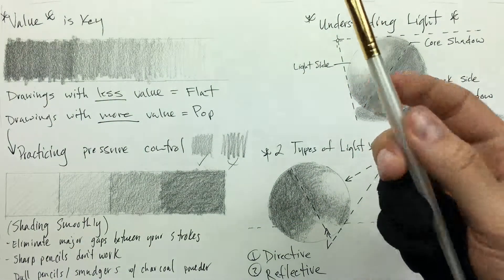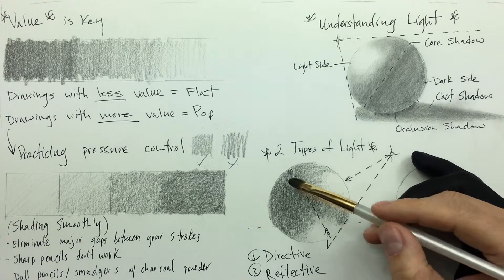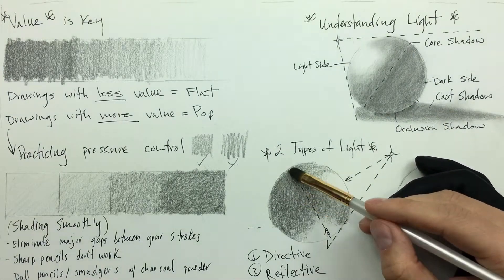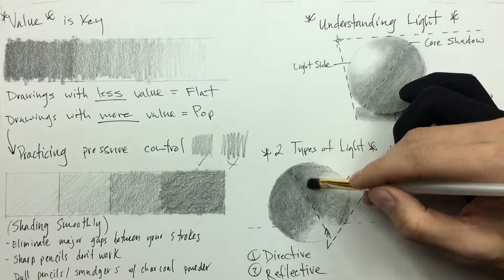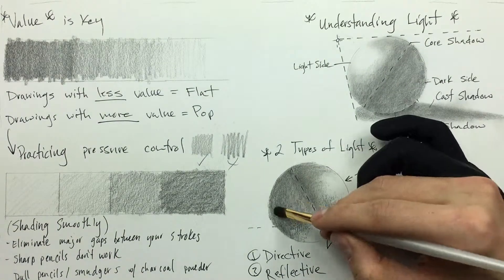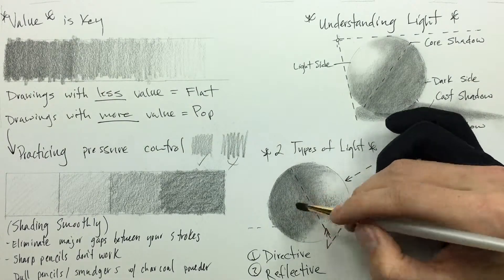It's important to note here that you can always add more graphite. Then we're going to take our brush, we're going to fluff this all up and soften it up. I love the brush because I can move a lot of graphite very quickly and it gives me a really nice effect that I enjoy.